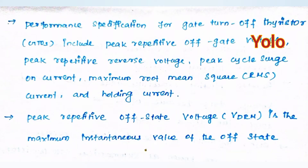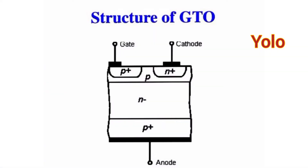Performance specifications for Gate Turn-Off Thyristors include: peak repetitive off-state voltage, peak repetitive reverse voltage, peak cycle surge on-state current, maximum RMS current, and holding current. Peak repetitive off-state voltage is the maximum instantaneous value of the off-state voltage during operation.